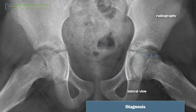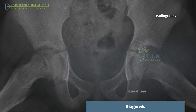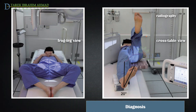The posterior displacement and step-off of the epiphysis on the femoral neck are better demonstrated on the lateral view. The lateral projections are obtained by the frog-leg or true lateral hip radiographs — the cross-table view. The cross-table view is recommended in patients who have acute slips, since the flexion and abduction of the hip necessary for the frog-leg view may displace the physis in these unstable slips.